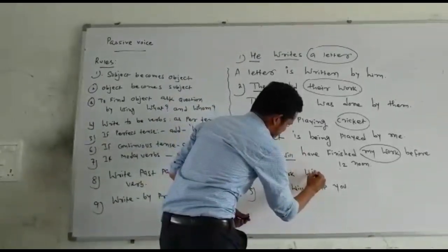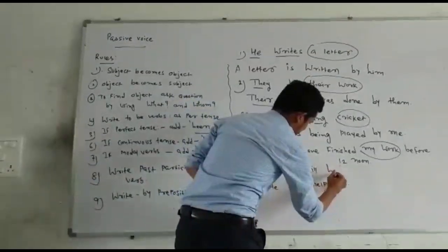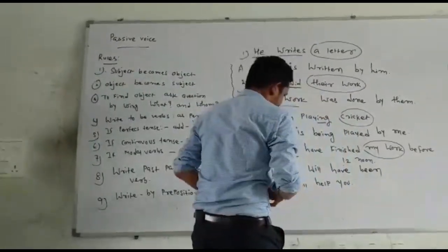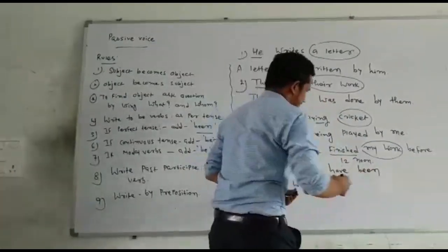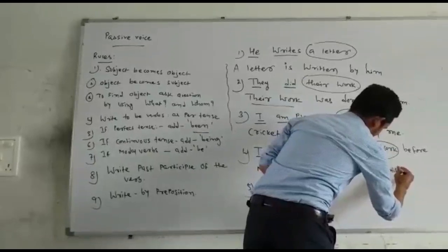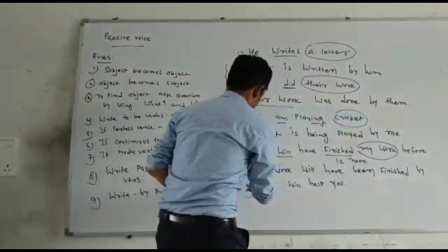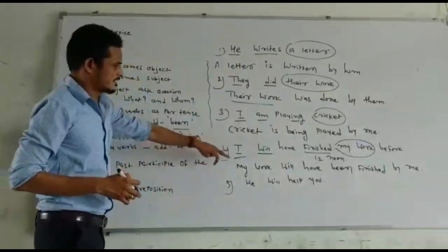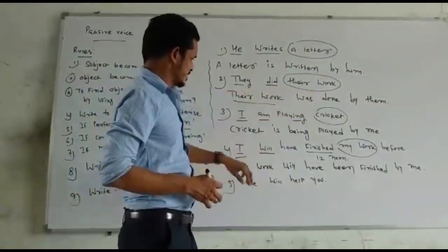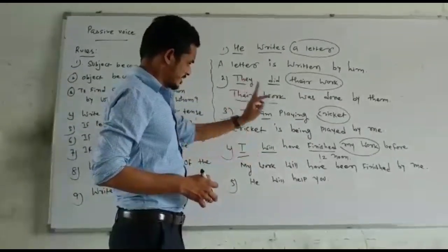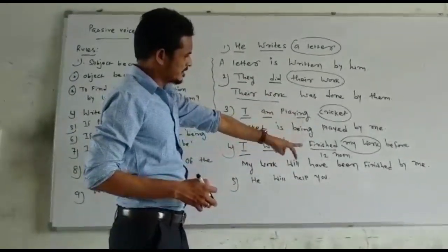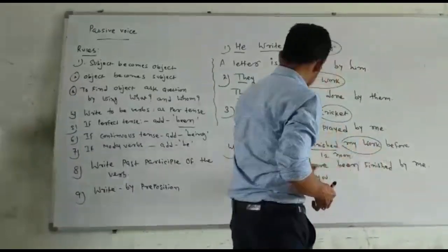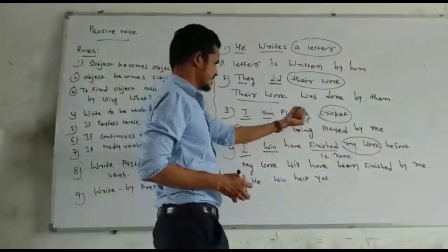Continuing the future perfect passive: 'will' remains unchanged, then we write 'have,' then after 'have' we add 'been,' then the past participle 'finished' — which is already given in the sentence. Then 'by' preposition. The subjective pronoun 'I' changes into the objective pronoun 'me.' So: 'My work will have been finished by me.' For perfect tenses: will/have + been + past participle (already given) + by + objective pronoun.